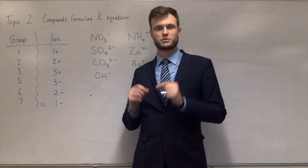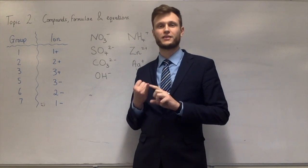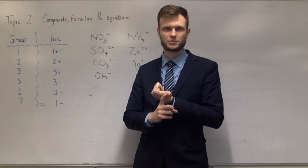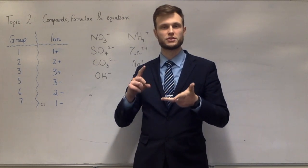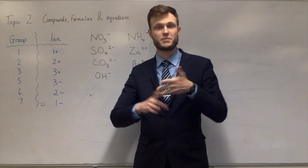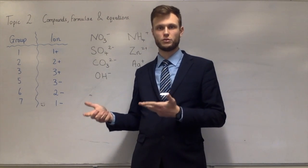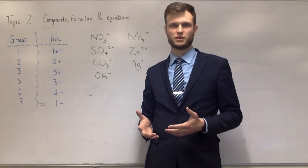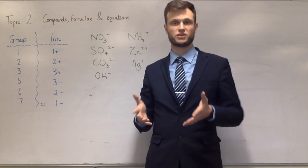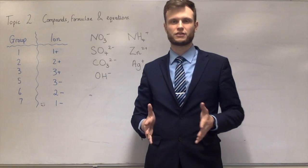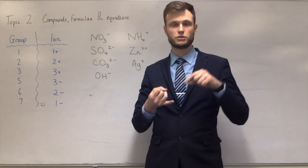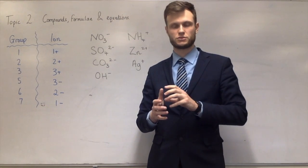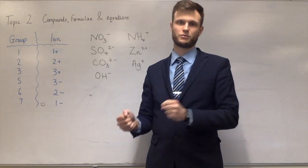You're expected to be able to write balanced symbol equations, and there are some chemical reactions you're expected to know — for instance, the reactions of acids: acid plus metal hydroxide, acid plus metal oxide, acid plus metal carbonate, and acid plus metal. These are expected from GCSE. But what they like to do is use strange acids you've never seen before, like nitrous acid HNO2. Don't let this freak you out — it's exactly the same. Acid plus metal hydroxide makes salt plus water. Just take the H+ off the acid and replace it with the metal ion.